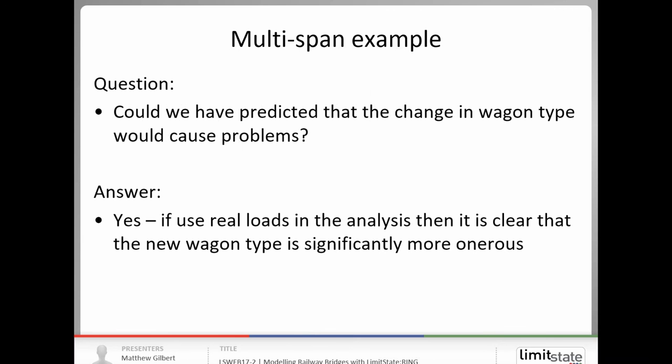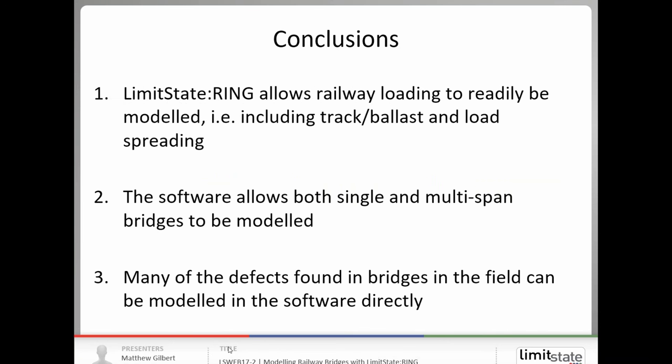So going back to my question, could we have predicted that this change in wagon type would cause problems? The answer is yes if we had have been using real loads in the analysis then it's clear that the new wagon type is significantly more onerous. If we look at the initial case that we ran where there was no dynamic factor applied we were moving from an adequacy factor of 2.1 down to 1.3, so an 8% increase in axle loads but a massively bigger reduction in adequacy factor because the pattern of loading has been changed.